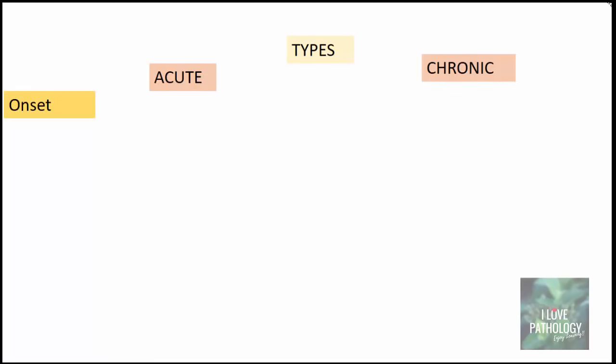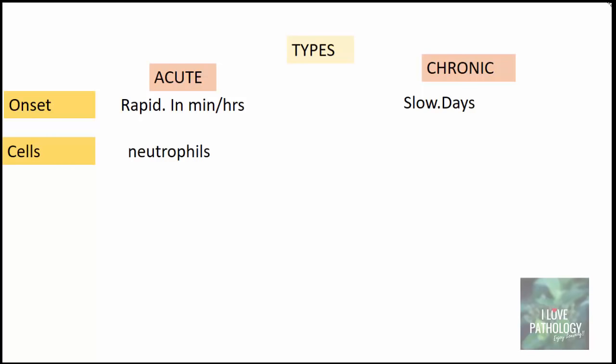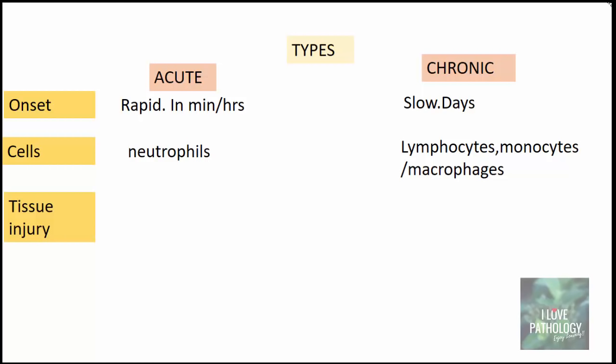There are two broad categories of inflammation: acute inflammation and chronic inflammation. Acute inflammation is very rapid in onset, starting within minutes or hours, whereas chronic inflammation is very slow in onset and may take days to set in. The cells involved in acute inflammation are polymorphonuclear leukocytes, meaning neutrophils, whereas chronic inflammation involves lymphocytes, monocytes, and macrophages.